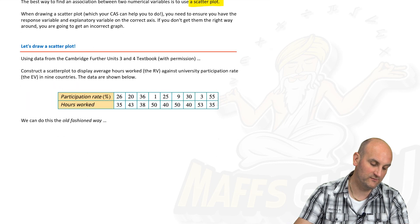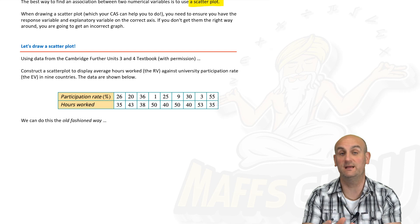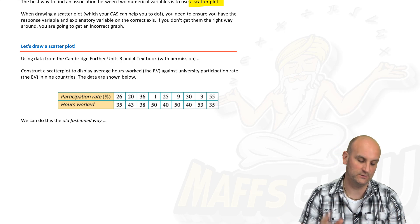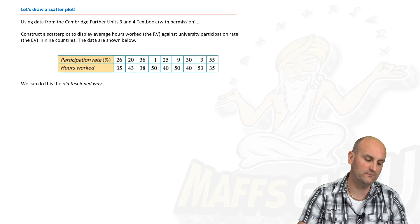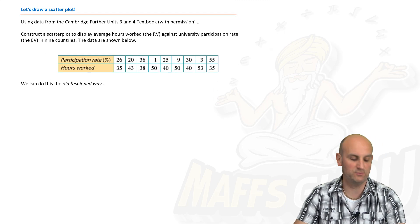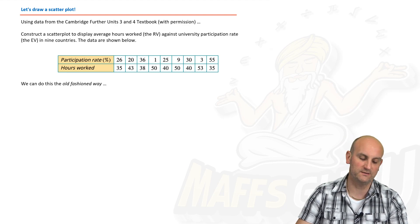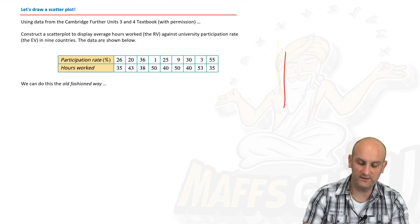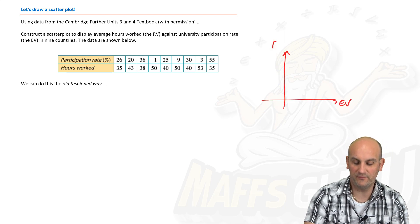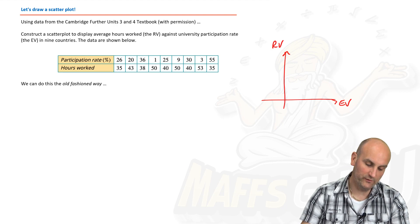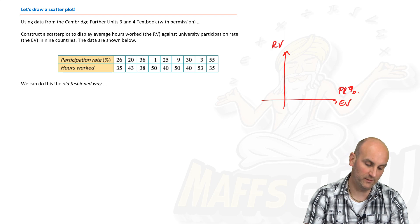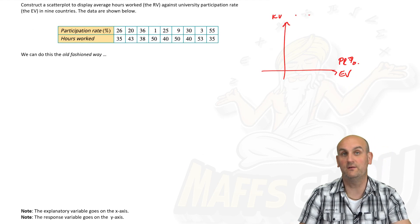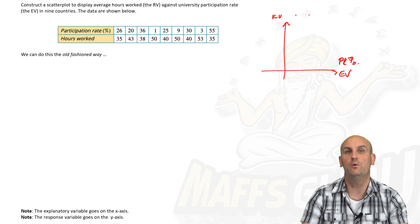Now we've done scatter plots before in previous years, at least drawing them. There's two ways to do it: by hand, which you could be expected to do in both the SAC and an exam, and using your CAS. I'm going to show you how to use your CAS in just a moment. But let's do it first by drawing a scatter plot. Using the data from the Cambridge Further Units 3 and 4 textbook with permission, we want to construct a scatter plot to display average hours worked, the response variable, against university participation rate, the EV, in nine countries with the data shown.